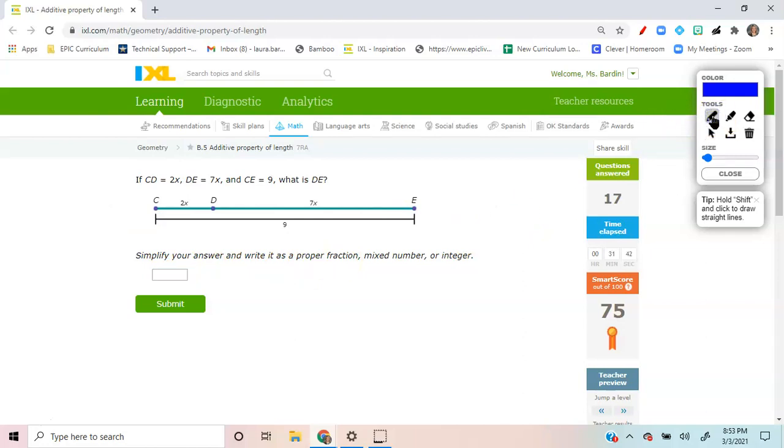This plus that is equal to the total length. Let's go ahead and write it. Let's go ahead and find out what it's wanting to know. What is D to E? What is this measure right here? Let's go ahead and simplify it. If they're on the same side of the equal sign, in this case, 2X and 7X are both on the left side of the equal sign. So I can combine those two together because they are like terms.